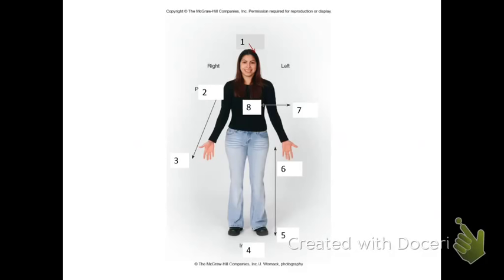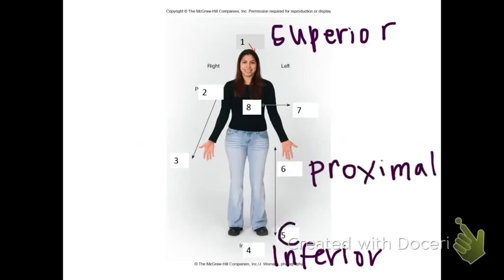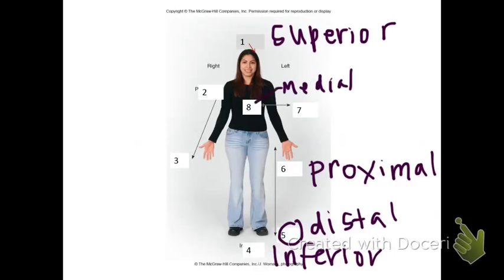This one is on page 14 of your lab book — pause the video and make sure you can answer all of those. Up here you have superior and inferior. Number two and number six are the same thing, and they are proximal. Five is distal, and five and three are the same thing. Then eight right here in the middle is medial, and seven is lateral.